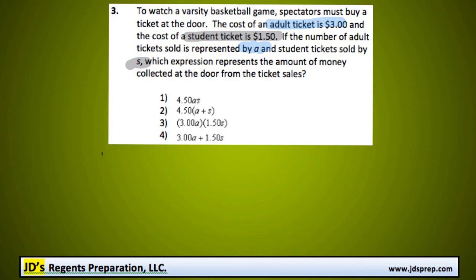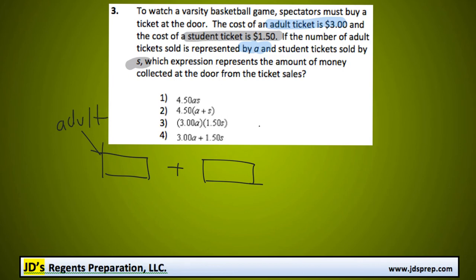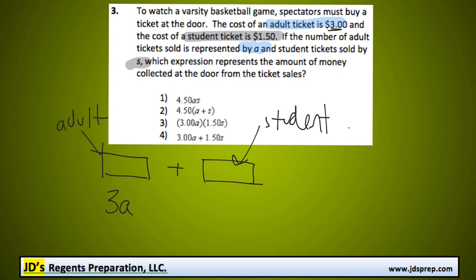This is going to involve an addition problem because we are adding two different things: the amount of money they're making from adult tickets sold, plus the amount of money they're making from student tickets sold. So the expression for the adult tickets sold would be $3 multiplied by the number of tickets sold, which is represented by our variable A.